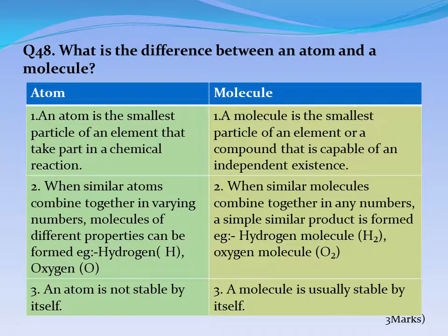Question No. 48: What is the difference between an atom and a molecule? Answer: An atom is the smallest particle of an element that takes part in a chemical reaction. A molecule is the smallest particle of an element or a compound that is capable of independent existence. When similar atoms combine together in varying numbers, molecules of different properties can be formed. Example: Hydrogen H, Oxygen O. When similar molecules combine, a simple similar product is formed. Example: Hydrogen molecule H2, Oxygen molecule O2. An atom is not stable by itself, whereas a molecule is usually stable by itself.